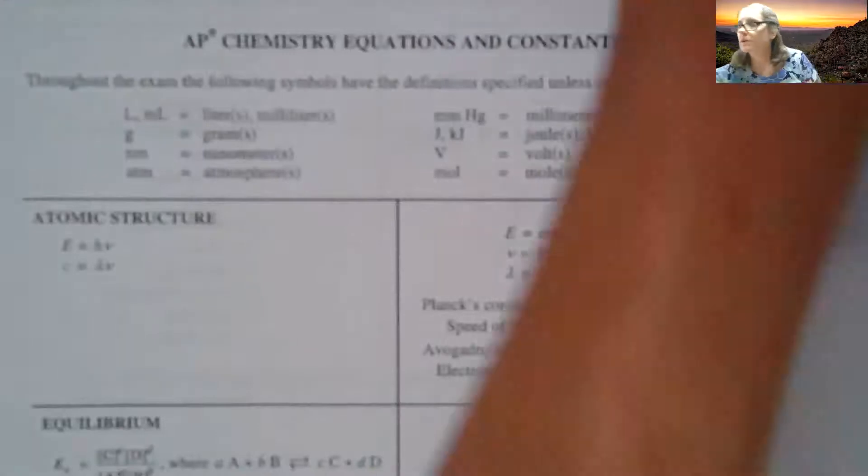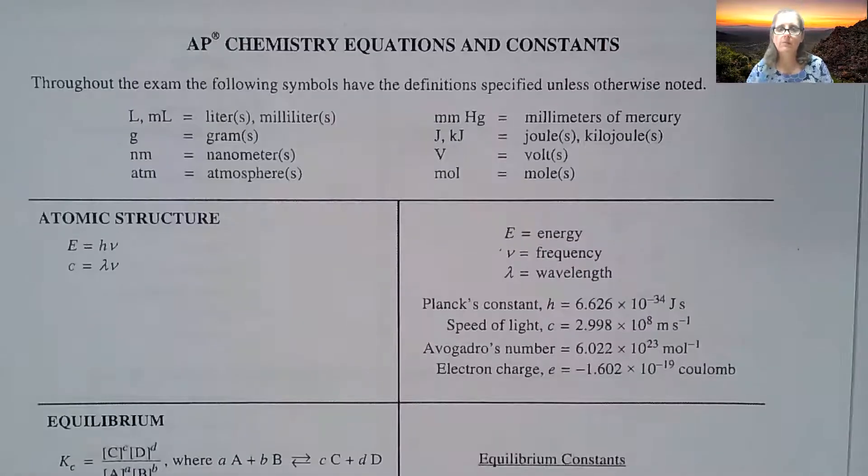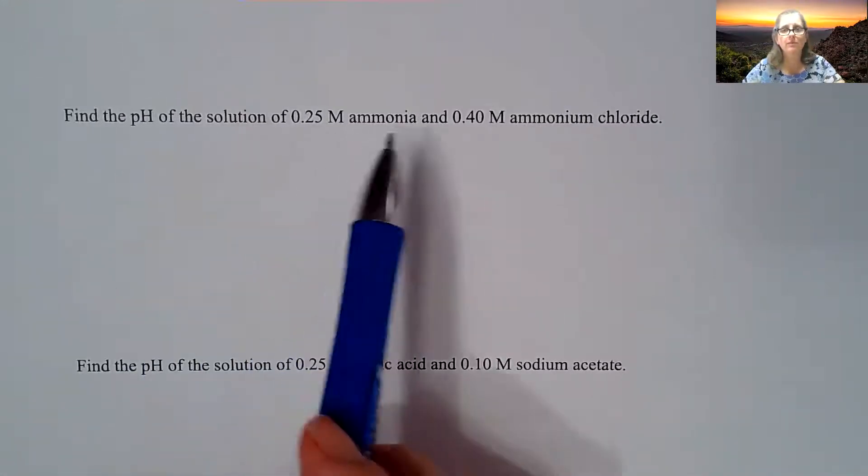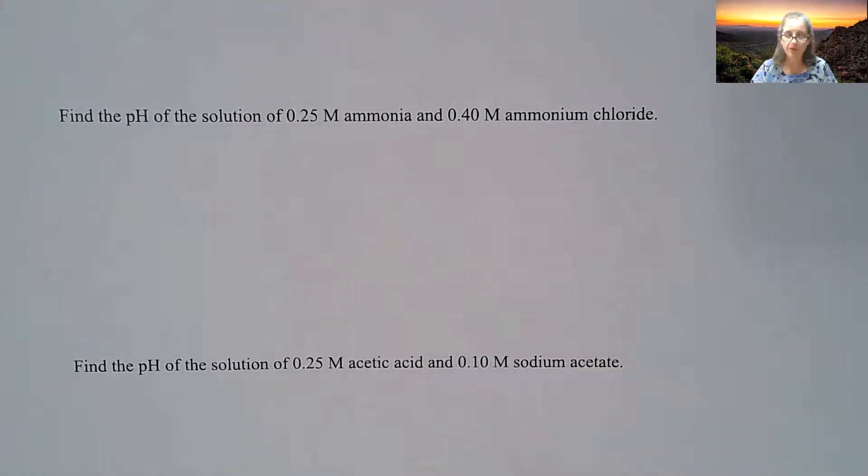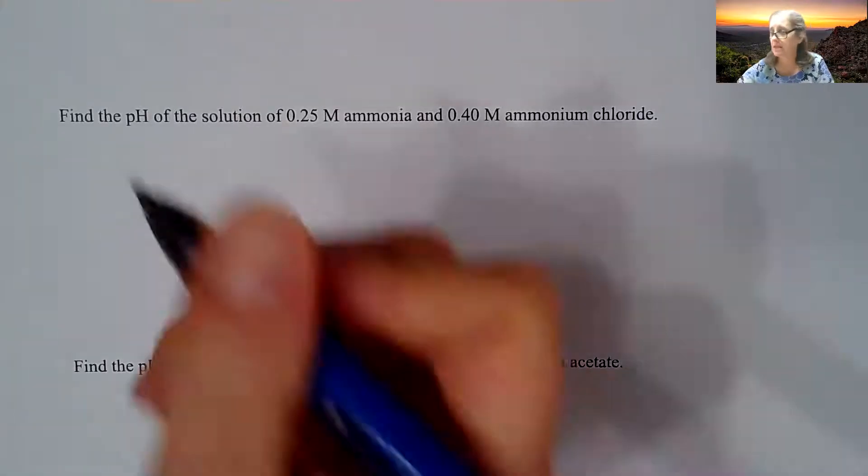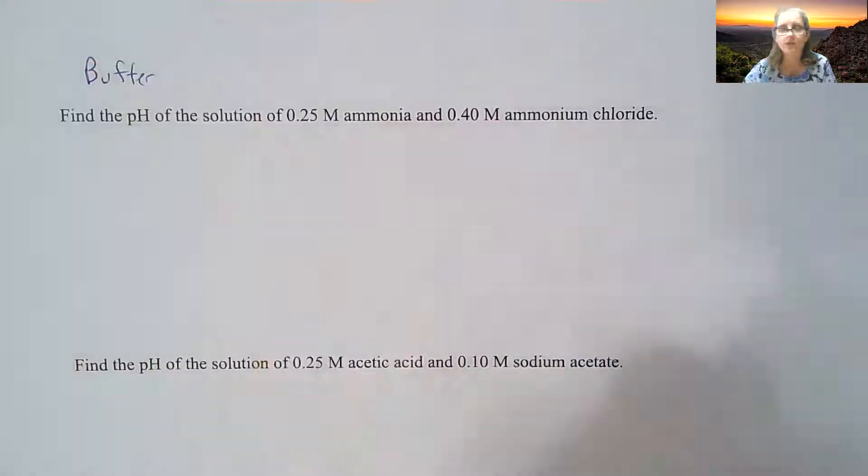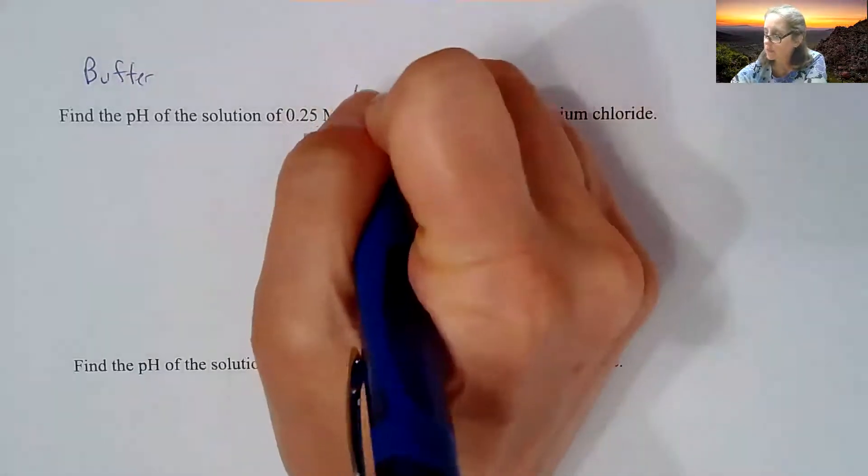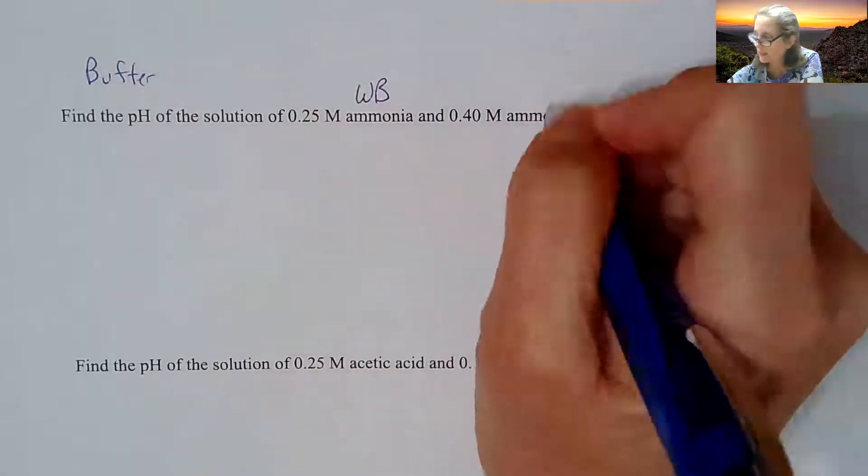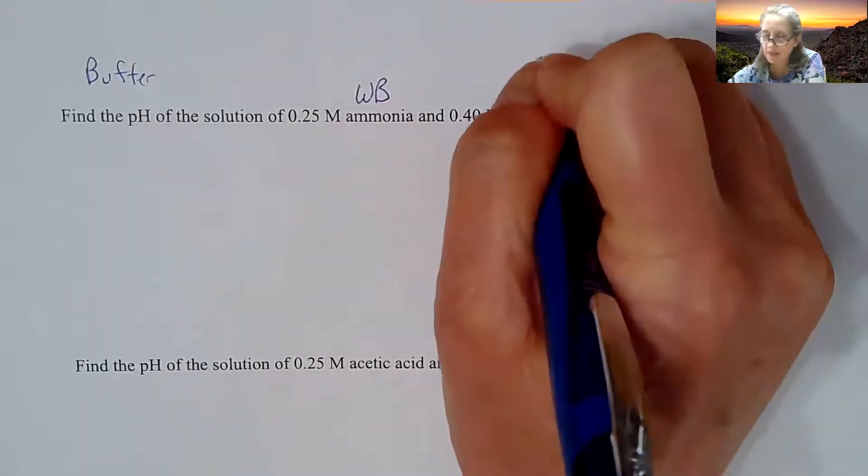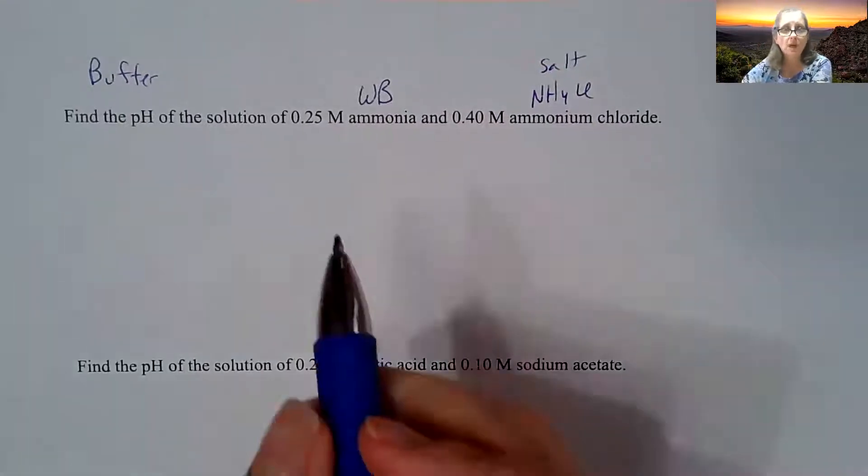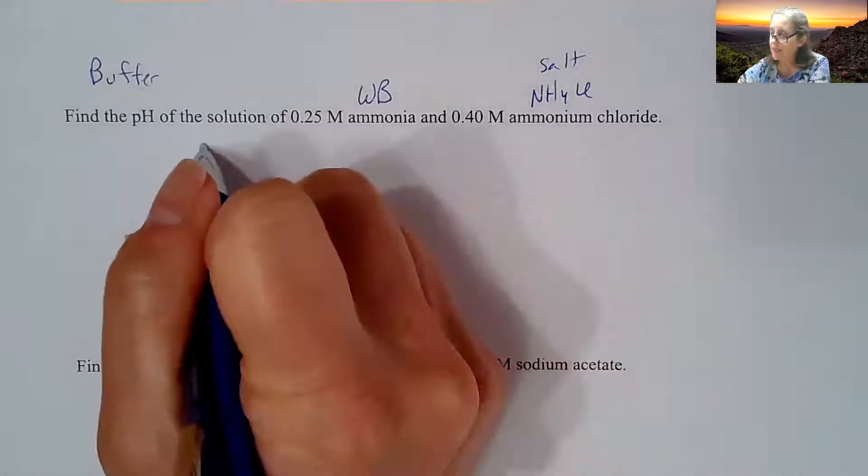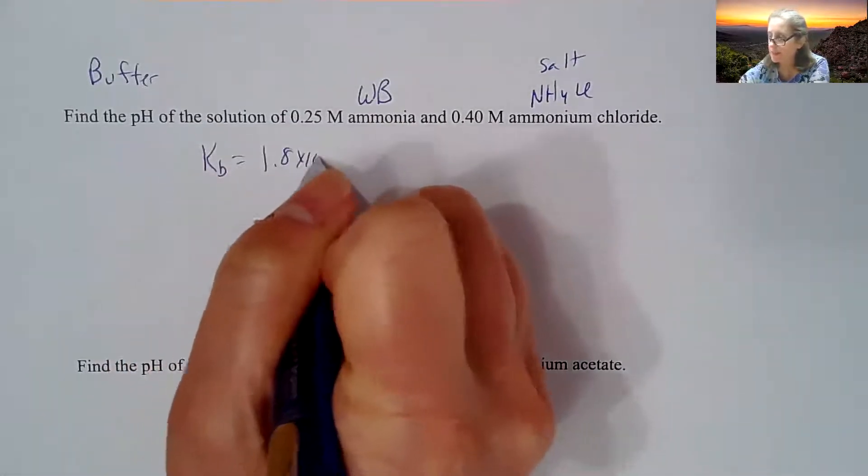All right, find the pH of a solution with 0.25 molar ammonia and 0.40 molar ammonium chloride. So first off, you have to recognize that this is a buffer. That's really going to be your trickiest part of all of these calculations is understanding what do you have. So ammonia is a weak base. Ammonium chloride is NH4Cl. That is a salt.